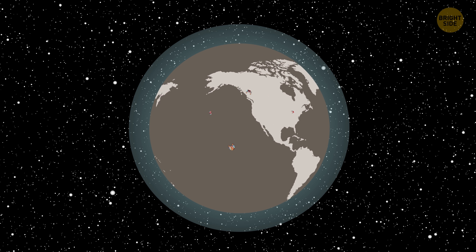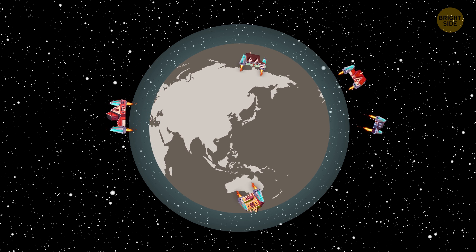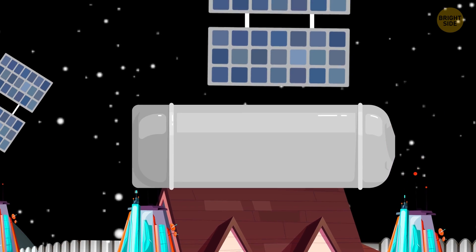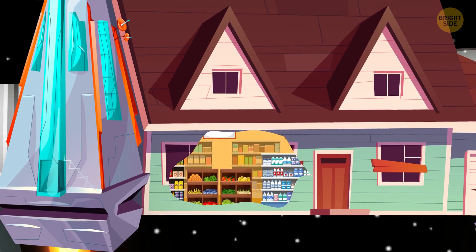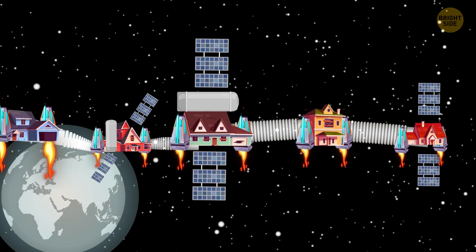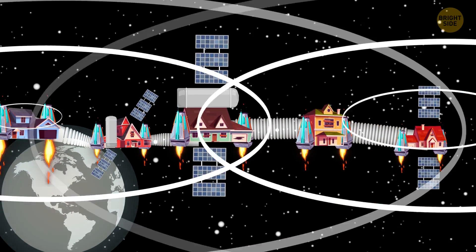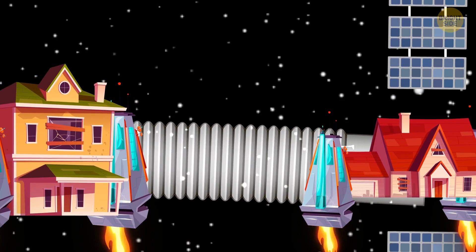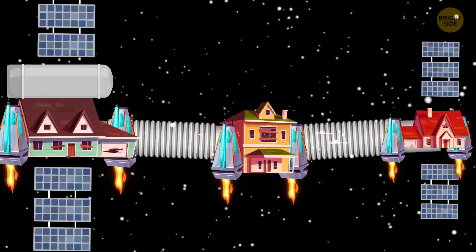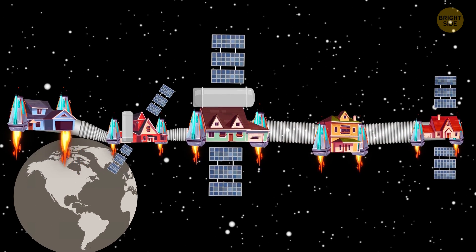Instead, hundreds of millions of houses are flying into space. They're equipped with super drives, oxygen, food supplies, and solar panels. All houses are connected into a single network, and people maintain communication. If something breaks in one house, or it runs out of fuel, the rest will come to help.